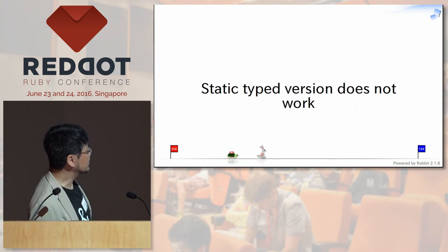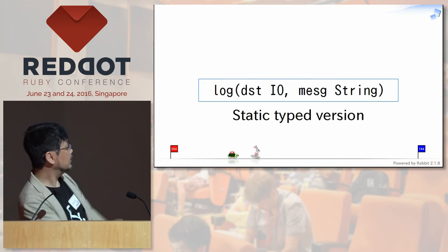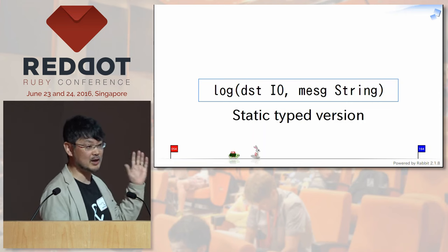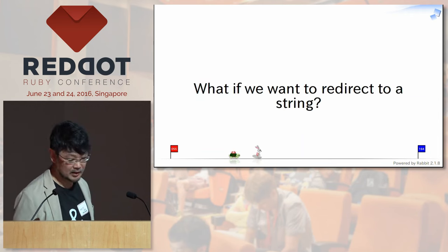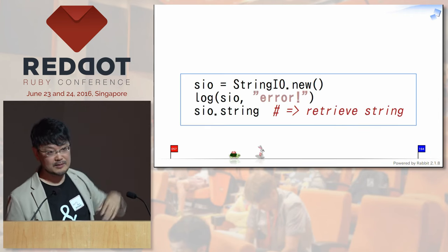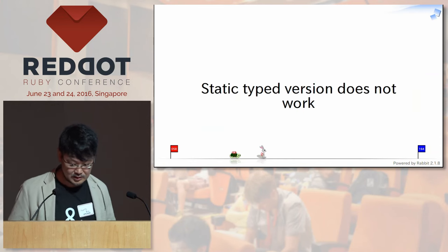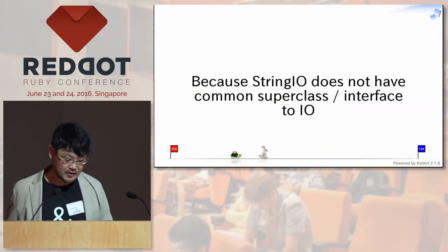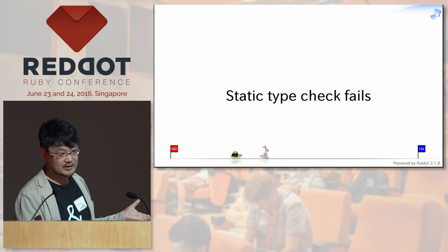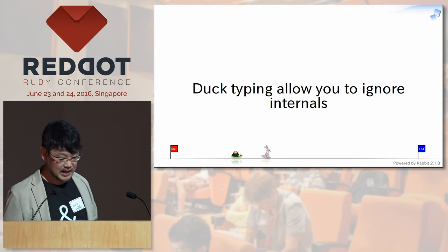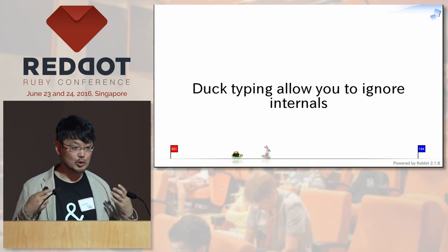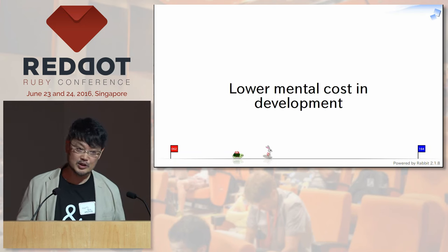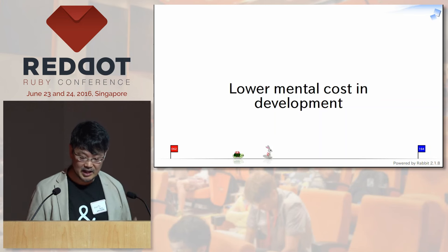In the static type version, the function signature says IO here. So if StringIO is passed, since StringIO is not a subclass of IO, it refuses to compile. This kind of program is prohibited in static type programming languages. The static type version doesn't work as expected because StringIO doesn't have a common superclass or interface to IO. The type check fails at compile time. Compared to that, duck typing or dynamic typing allows you to ignore internals — you can focus on the behavior of the object, without caring about the inheritance tree. It has lower mental cost in development.